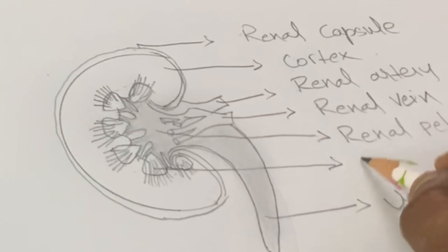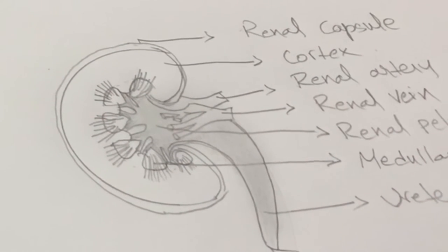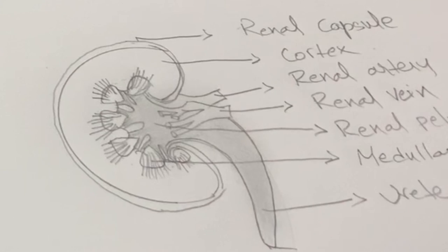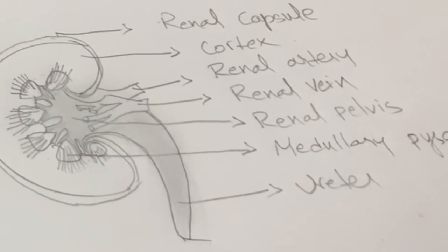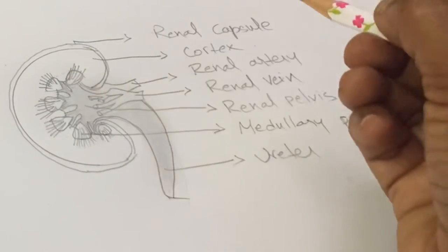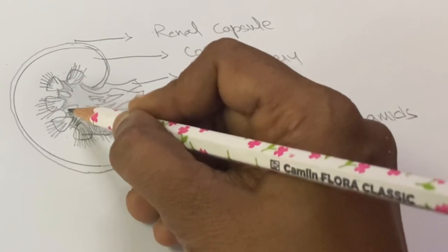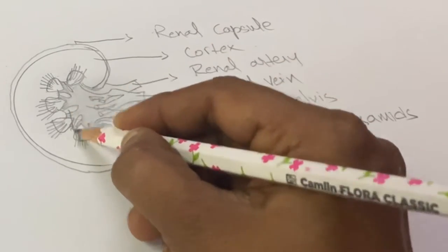Medullary pyramids, and this is the cortex region and this is the medulla region. Next, these are the renal columns or column of Bertin.